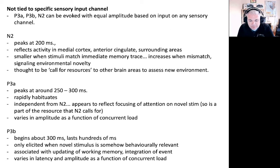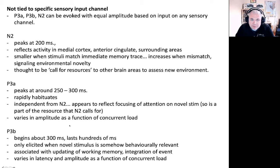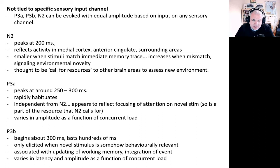The N2 component, the second negative wave, peaks at about 200 milliseconds and involves medial prefrontal cortex and anterior cingulate. It is smaller when stimuli match the immediate memory trace and increases when there's a mismatch between environmental context and current stimulation. The P3A appears at about 250 milliseconds, rapidly habituates with repeated stimuli, has a parietal source independent from the N2, and has been linked to focusing attention on novel stimuli. The P3B is the largest positive deflection, beginning around 300 milliseconds, lasting a long time, and is only elicited when the oddball stimulus is behaviorally relevant or requires memory encoding.